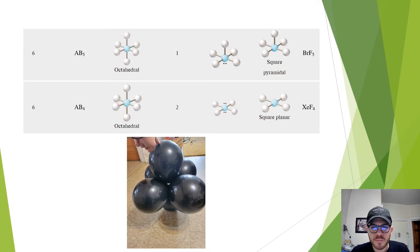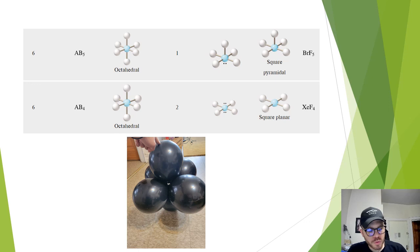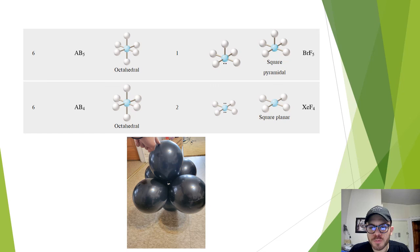This is a five-balloon configuration. Finally, with six balloons, the arrangement is an octahedron, which is essentially a square bipyramid. For AB5 and AB4 molecules, the total number of electron domains is six and the electron domain geometry is octahedral. AB5 has one lone pair and a molecular geometry of square pyramidal — an example is bromine pentafluoride. AB4 has two lone pairs and a molecular geometry of square planar — an example is xenon tetrafluoride.